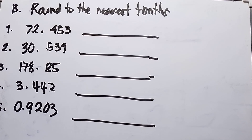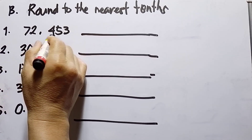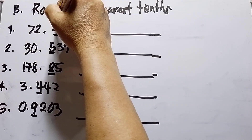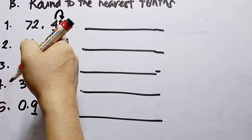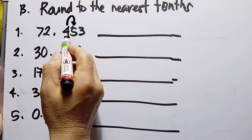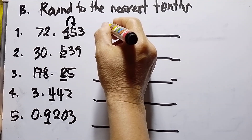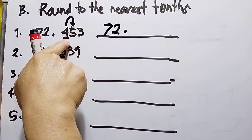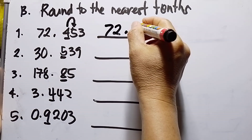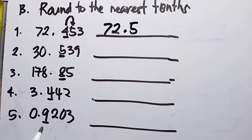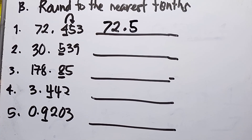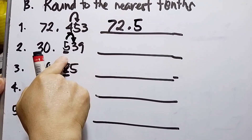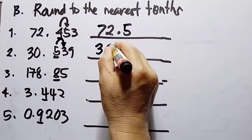Now let's solve letter B: round to the nearest tenths. I identify the tenths place for each number and make an arrow pointing to the digit to its right. If five or more, add one to the tenths digit. Number one: 72.44 — since the digit to the right is 4, which is five, we add one: four plus one is five. Answer: 72.5. Number two: 30.539 — since three is less than five, the tenths digit remains. Answer: 30.5.